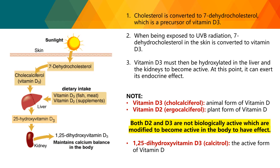It is important to get adequate sun exposure for vitamin D production. When babies are born, they appear pale, and they are often brought outside to sunlight to ensure the liver and kidneys are properly processing vitamin D, which gradually improves their coloring. For types of vitamin D that the body cannot produce on its own, dietary intake from fish, meat, supplements, or plant-based products is necessary.